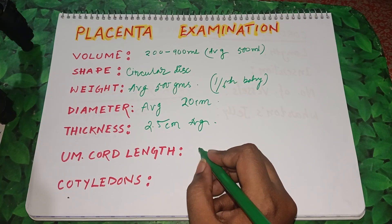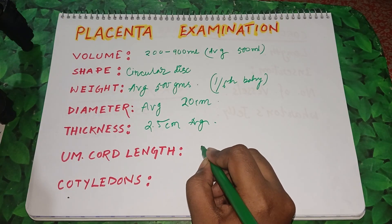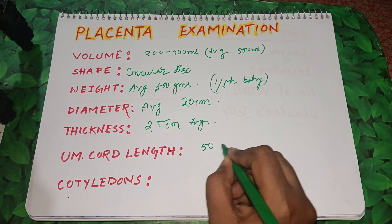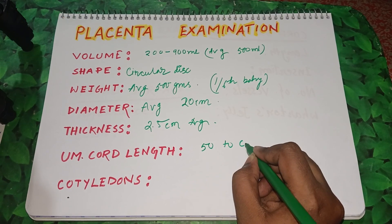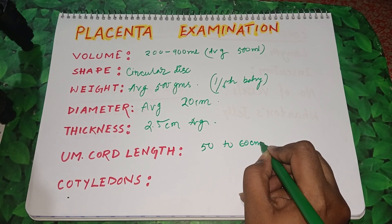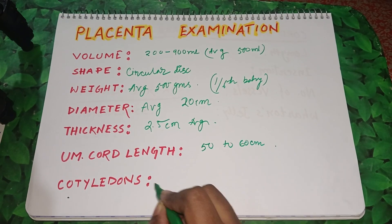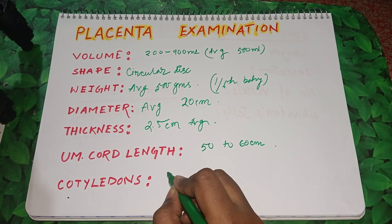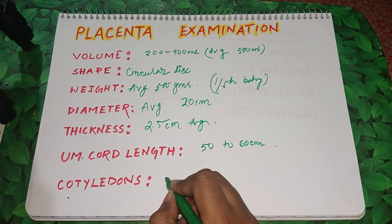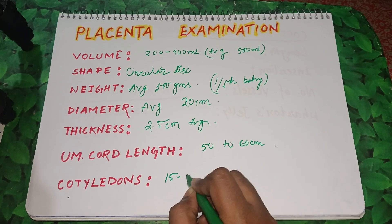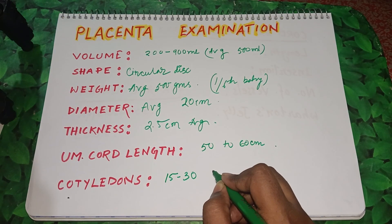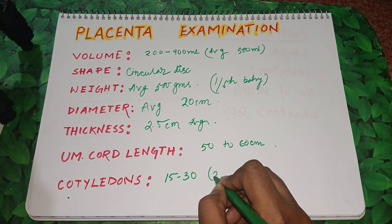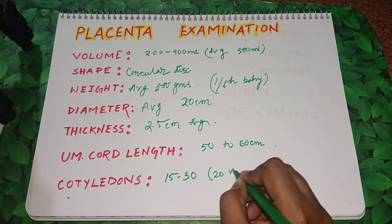The umbilical cord length in a normal placenta will be 50 to 60 centimeters. On the maternal surface, we can find the cotyledons — 15 to 30, and on average we can find 20 cotyledons.